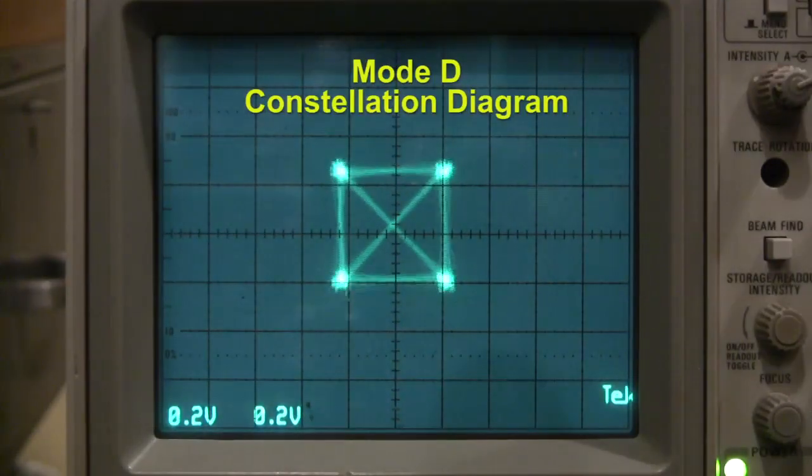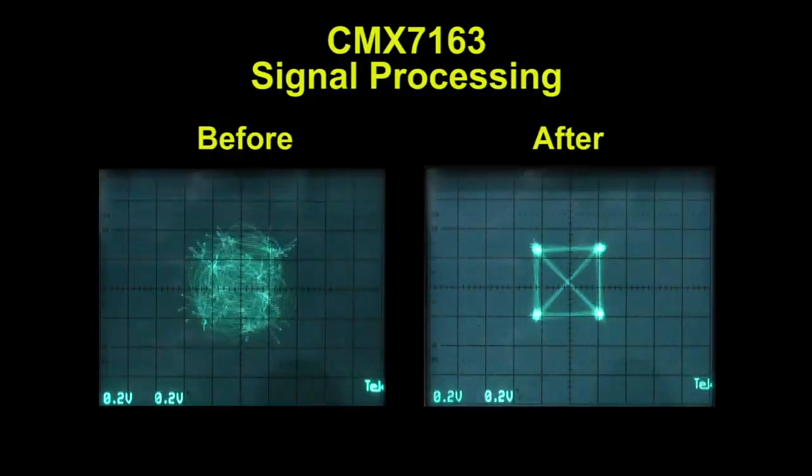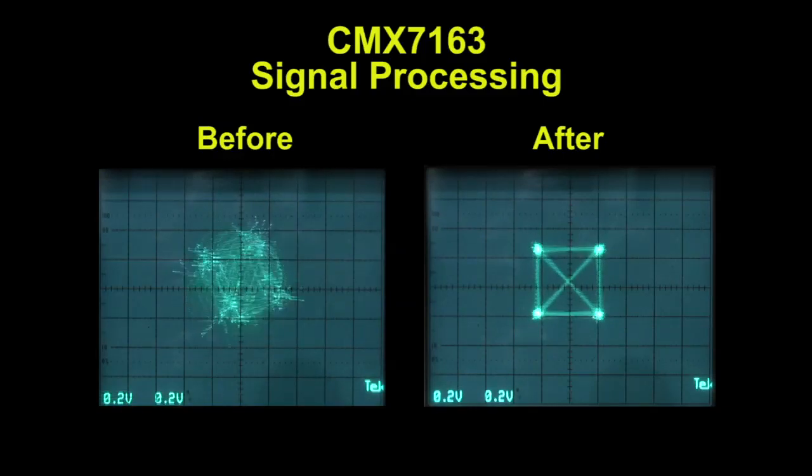As you can see from this image, frequency rotation has stopped and the size of the diagram has changed. This image illustrates the extensive correction the CMX 7163 applies to the received signal in order to extract the data. As you can see from this before and after comparison, the CMX 7163 performs an amazing amount of processing on the signal to ensure that your data gets through.